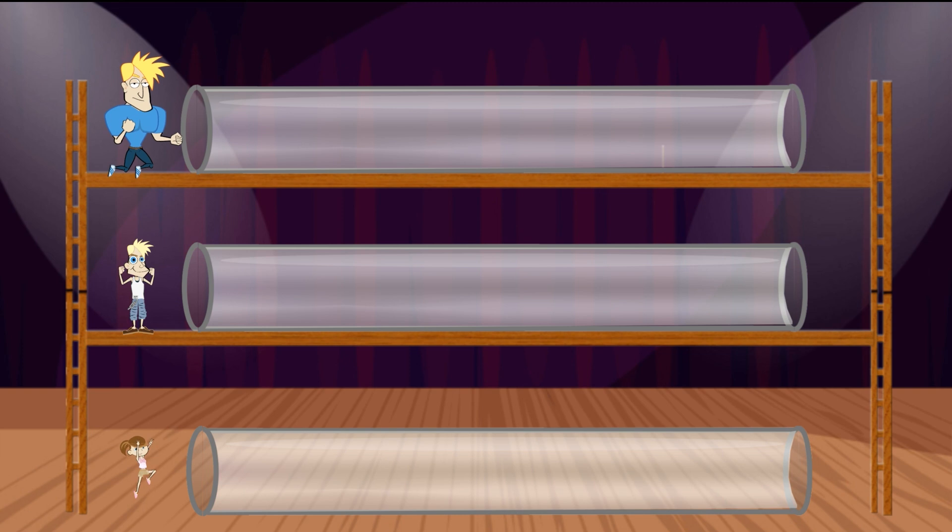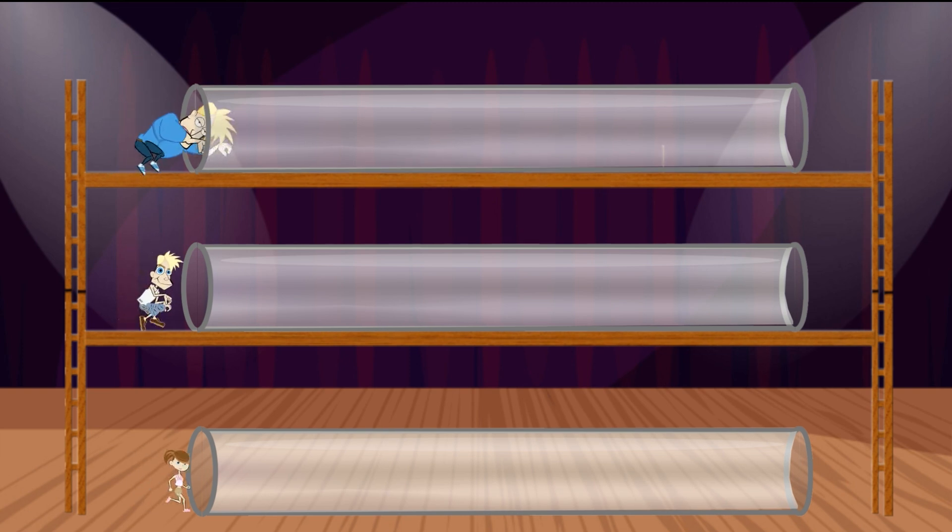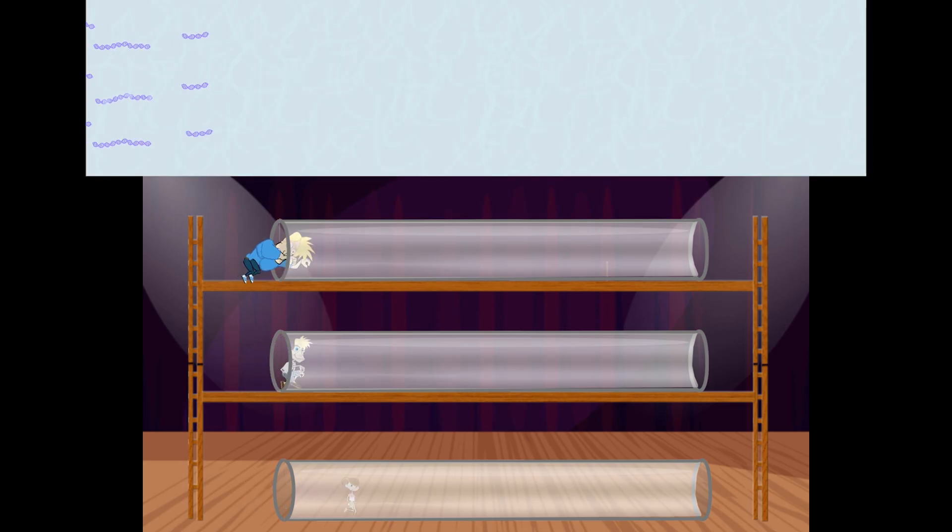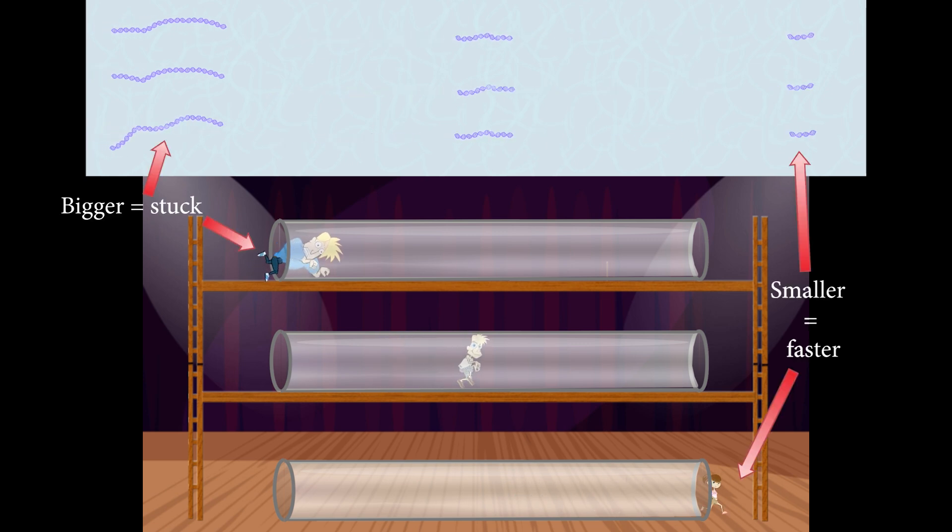As an analogy, consider this obstacle course race. The small girl can run through quickly. The medium-sized guy is a bit slower, and the large bodybuilder is slowest because he gets stuck in the tube the most. For the same reason, smaller DNA pieces move through the pores in the gel faster, but bigger pieces get stuck and move slower.